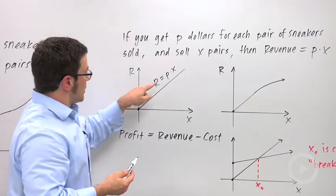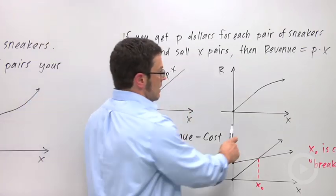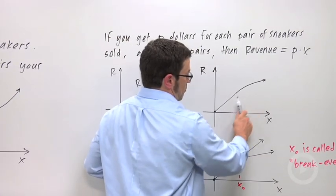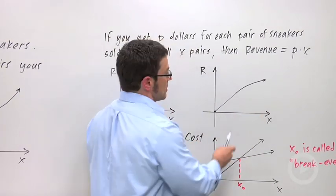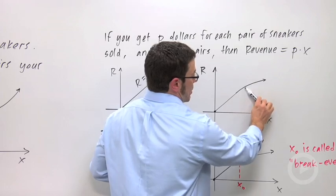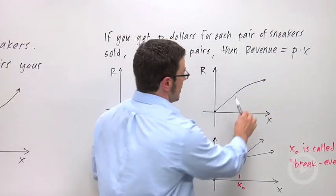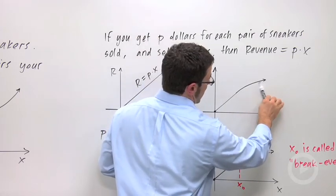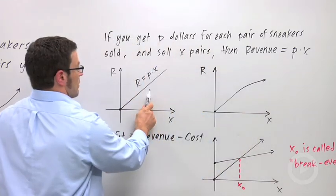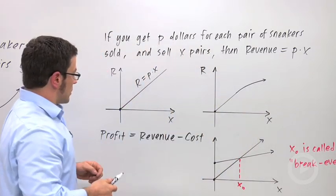But it is also possible that the price isn't constant. If you have too many pairs of sneakers out in the market, the price is going to go down, the demand for them goes down. So you might have this kind of concave down piece at the end. So you have a linear and a non-linear revenue function.